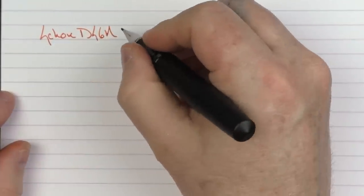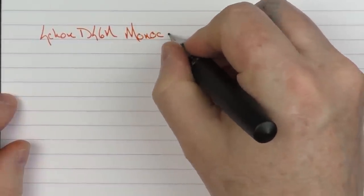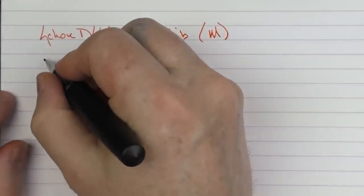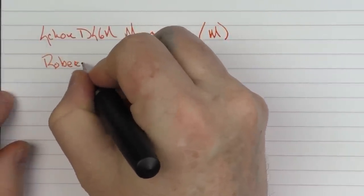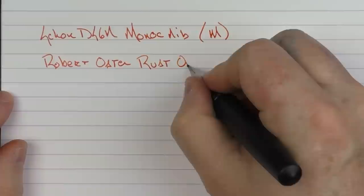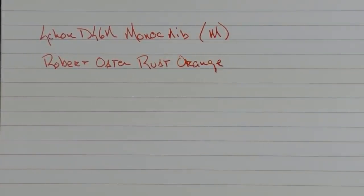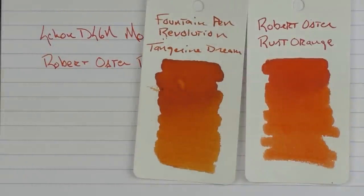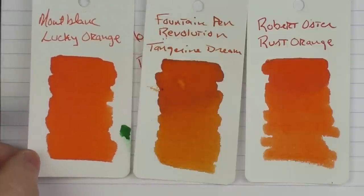Here we go with the writing sample for the Schoen Design, which is just DSGN. And this is the full size pen, but really this is the Monarch nib. That's the star of the show here. And this is a medium. And the ink that I'm using is Robert Oster rust orange. This is what the color looks like. It's an exclusive available through Galen Leather. It's a really nice kind of reddish orange. This is what it looks like in comparison to Fountain Pen Revolution's Tangerine Dream. And then here it is with Mont Blanc's Lucky Orange.